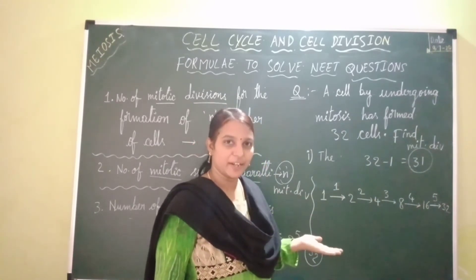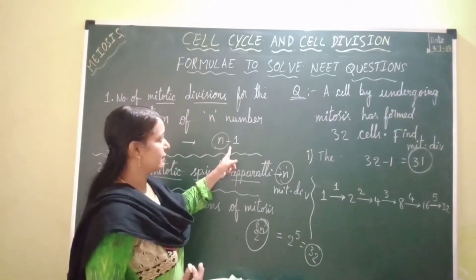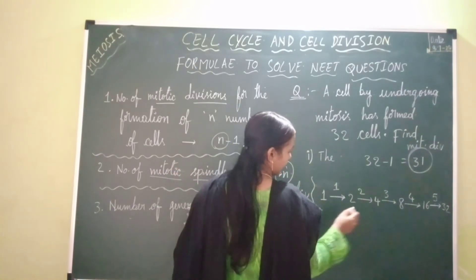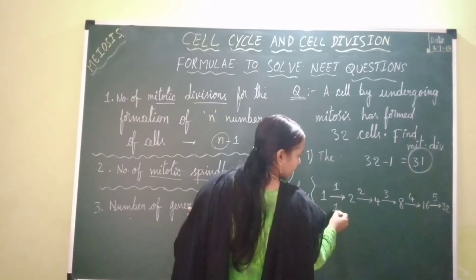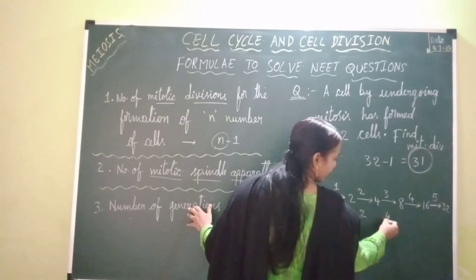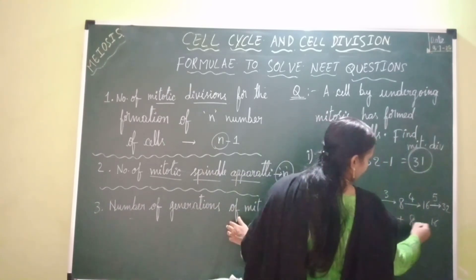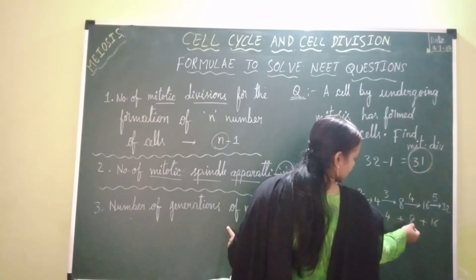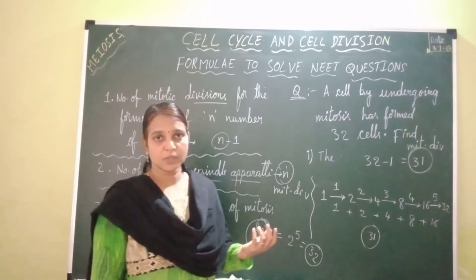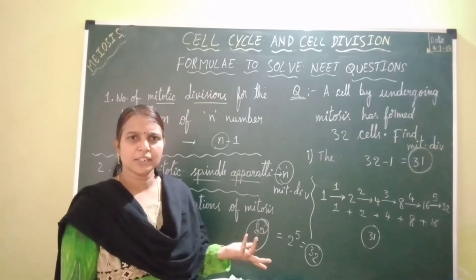Now let me explain why the formula n minus 1 gives 31. One cell undergoes one mitotic division. Those two cells undergo two mitotic divisions. Four cells undergo four mitotic divisions. Eight cells undergo eight mitotic divisions. Sixteen cells undergo 16 mitotic divisions. Adding all these: 1 plus 2 equals 3, plus 4 equals 7, plus 8 equals 15, plus 16 equals 31 — so 31 total mitotic divisions. For 100 cells, n minus 1 gives 99.